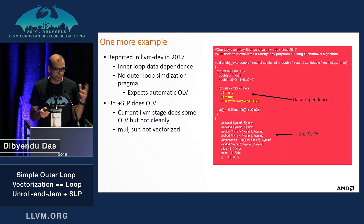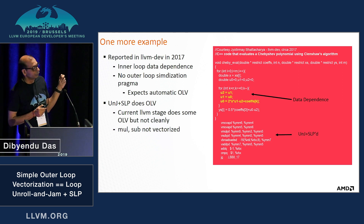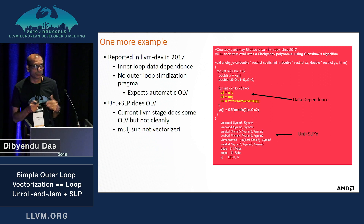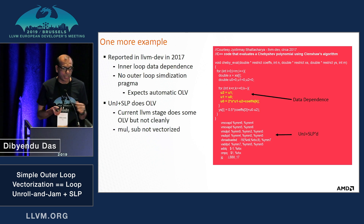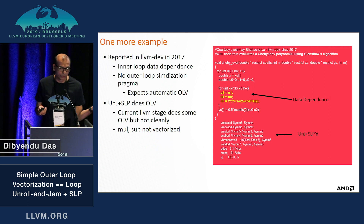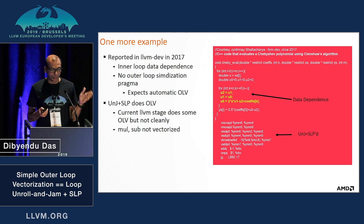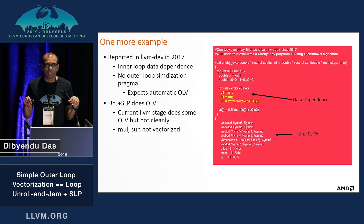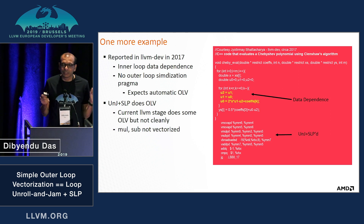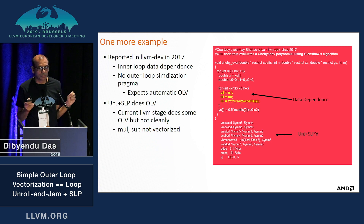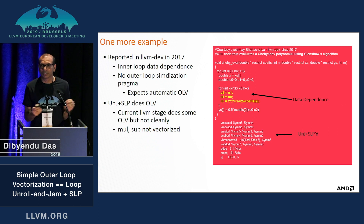With this work, there was an example reported on LLVM dev in 2017 which has inner loop data dependence, so you really cannot do loop vectorization of the inner loop, and no outer loop vectorization pragma was provided either — it expects automatic outer loop vectorization. With our patch, unroll-and-jam working before SLP, it actually does a good outer loop vectorization with nicely tight vectorized code. In today's LLVM, as of last week, there is some outer loop vectorization that happens but it is not clean — it vectorizes some load/stores, but the major mul/subs and others are not vectorized at all.